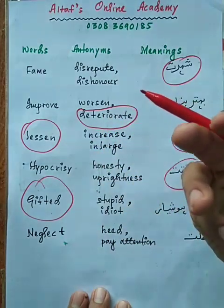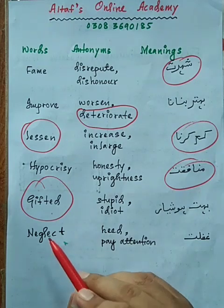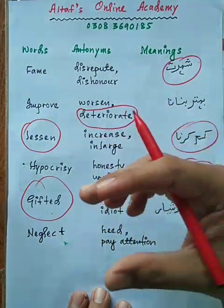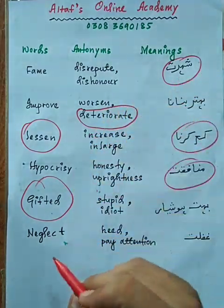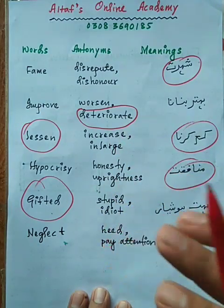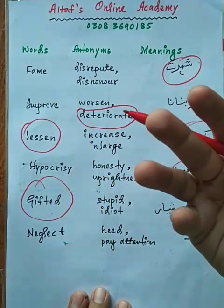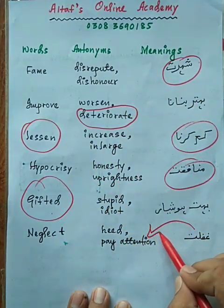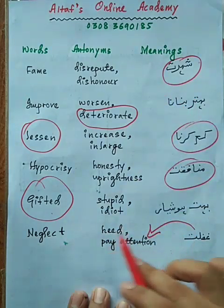Aakhri word aaj ke words and antonyms section mein hai 'neglect'. Neglect ki meaning hoti hai 'ghaflat', laparwahi — hum kisi cheez se ghaflat karte hain, laparwahi karte hain, use neglect kehte hain. Neglect ka antonym word kya hai? 'Heed' — heed ki meaning hai kisi cheez ko tawajjo dena. Ghaflat maane tawajjo nahi dena, to iska opposite heed maane tawajjo dena.